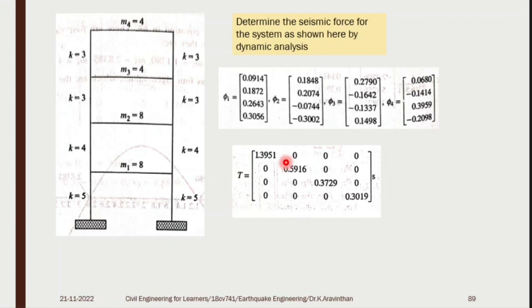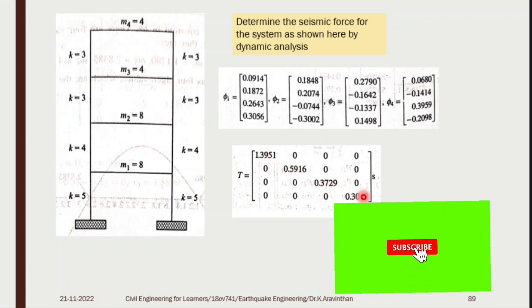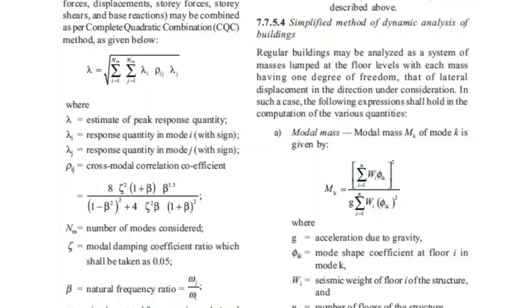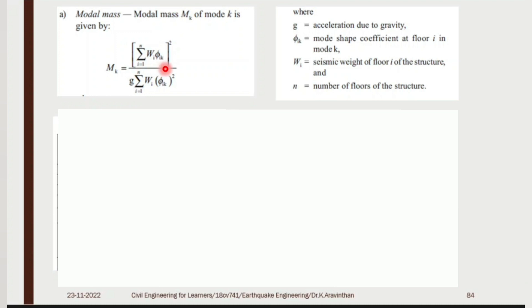To find the seismic coefficient Ah, you need Sa/g. The time period is given with respect to the two floors, and the mode shape is also given because you have four number of floors. Refer to page 23, section 7.7.5.4 for the simplified method of dynamic analysis. The formula for modal mass Mk is: Mk = (g × (Σ Wi × φik)²) / (g × Σ Wi × φik²), where φ is mode shape coefficient at floor i, W is seismic weight, and n is number of floors.